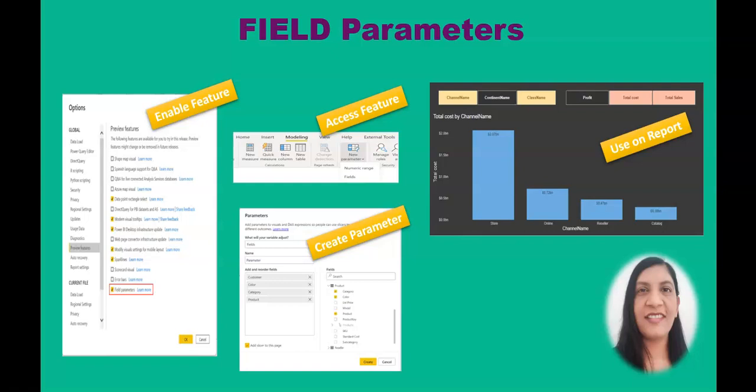Hello everyone. Welcome to the Power BI course. Today we are going to learn about field parameters. Field parameters are parameters where on the design side you design it to give more flexibility to the users, and users can dynamically change the category or value fields according to their need on the visual.